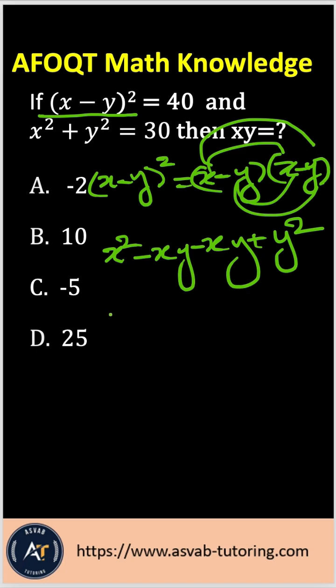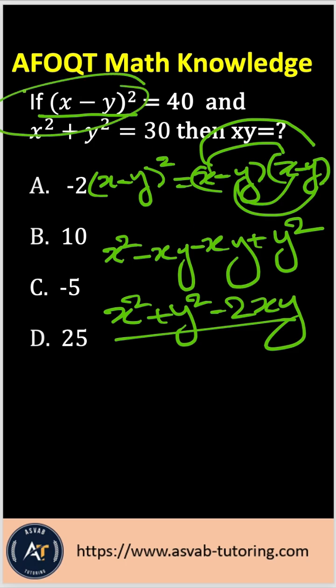Now combine the like terms. That gives you x squared plus y squared minus 2xy. Now plug the whole thing in here, so that gives you x squared plus y squared minus 2xy equal to 40.